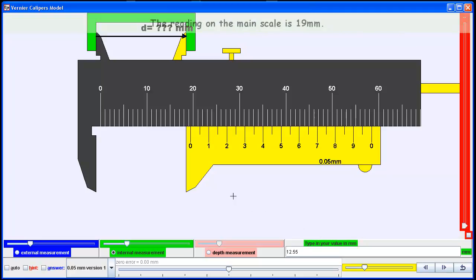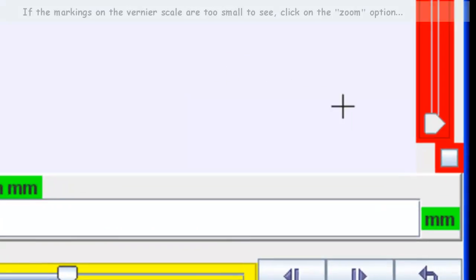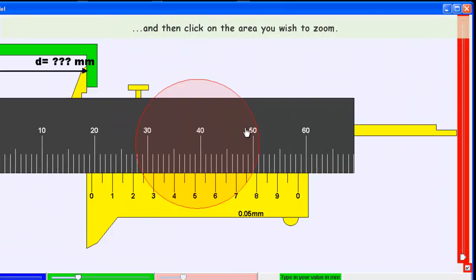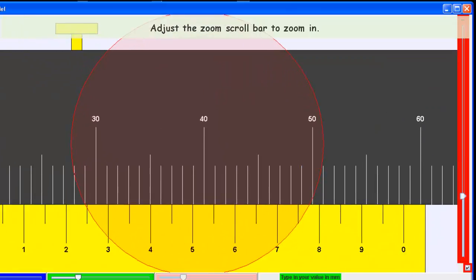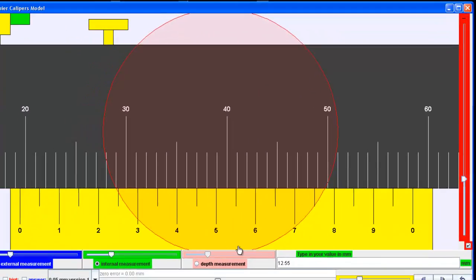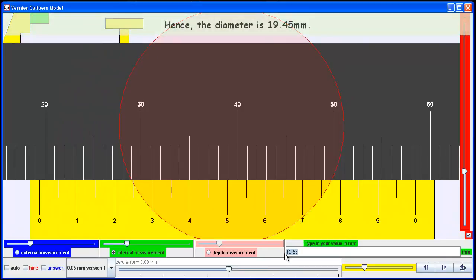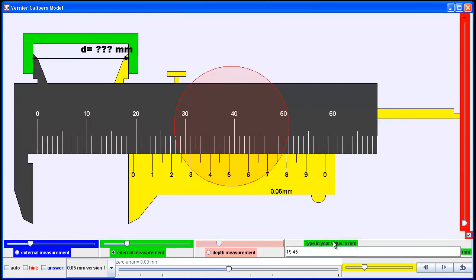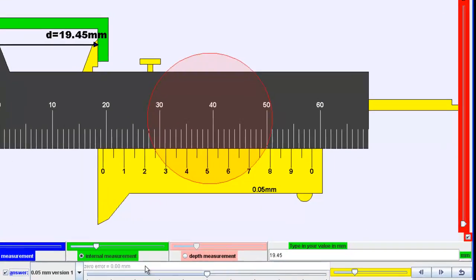As shown with the green object, teachers may want to focus students' attention on the markings, though this zoom feature is not recommended for student use. For assessment of learning, students can enter their answers in the input field to check if they are correct. The answer for this measurement is 19.45 mm.